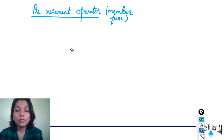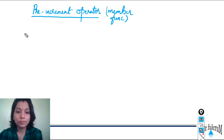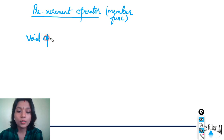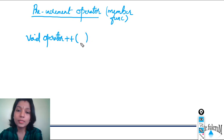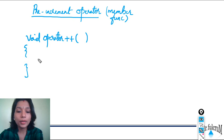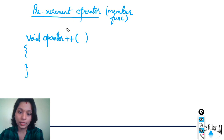Let's recollect how we overloaded the pre-increment operator as a member function of the class from the previous session. The return type of the function is void, and the function name is 'operator' followed by the symbol plus-plus. Since it's implemented as a member function, there should not be any arguments to the function. The function body contains the increment logic. This is how you overload a pre-increment operator as a member function of the class.